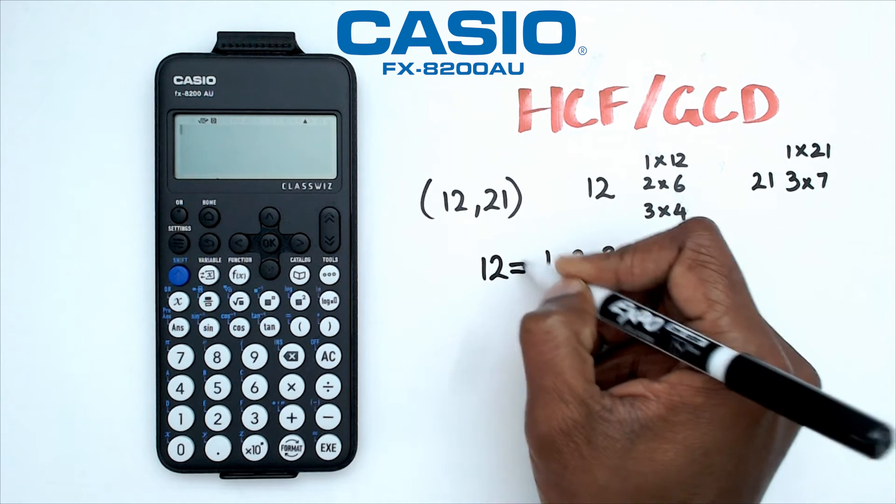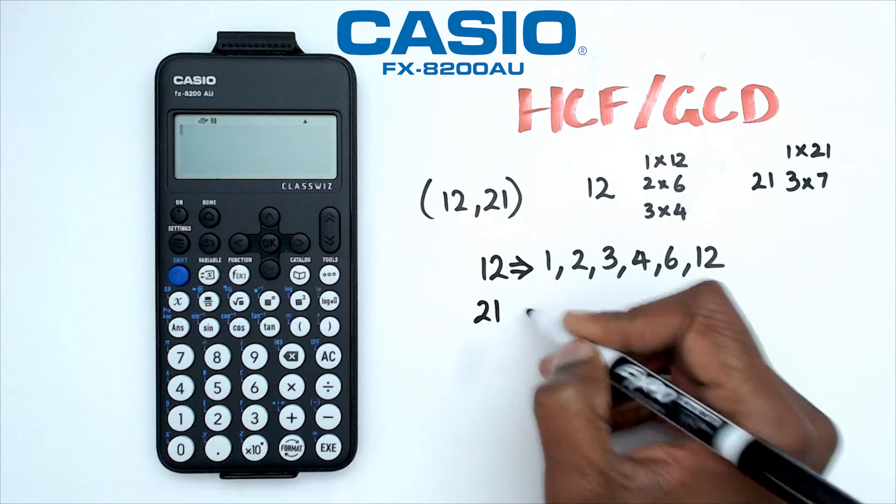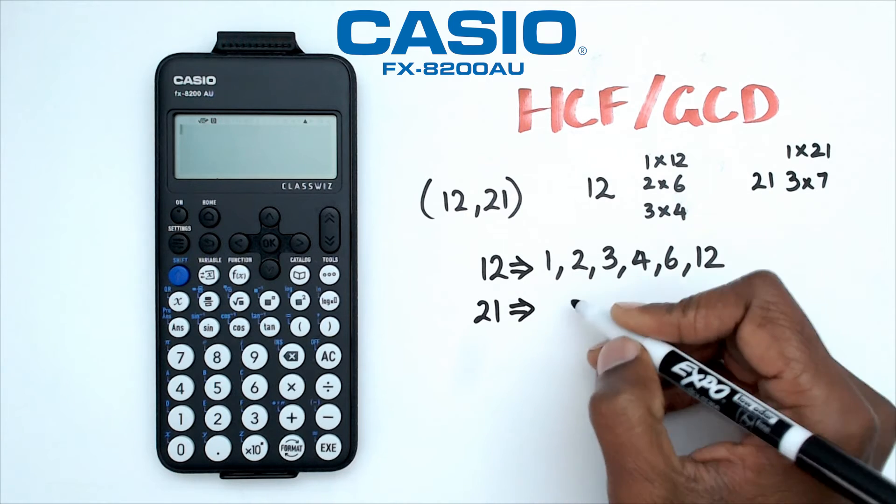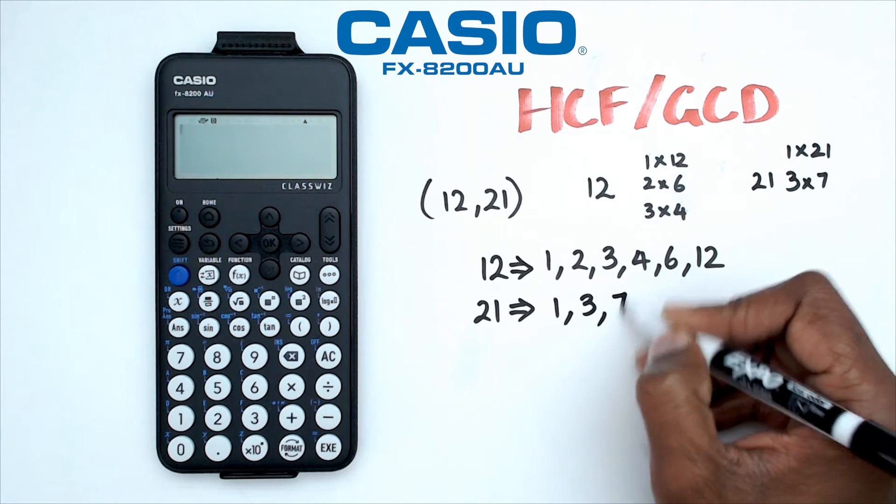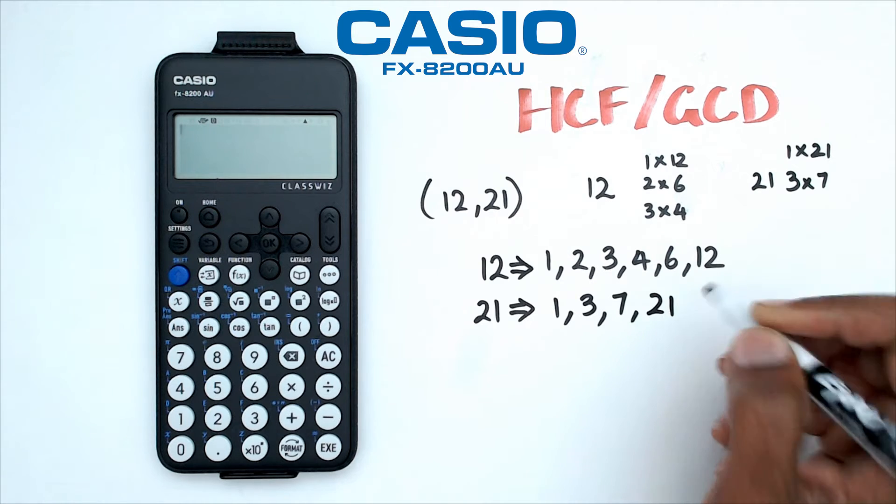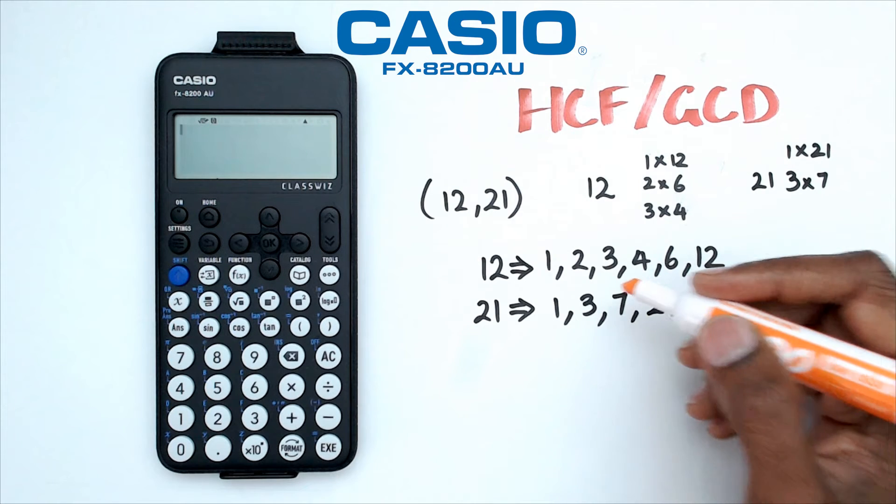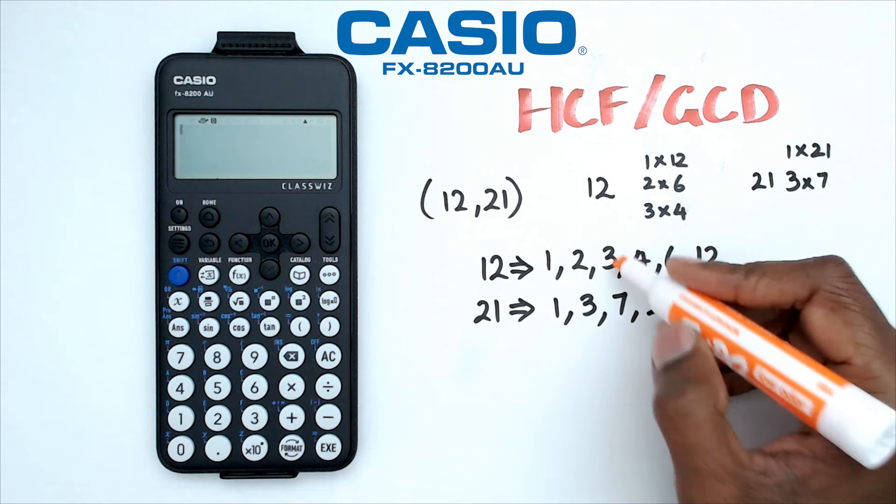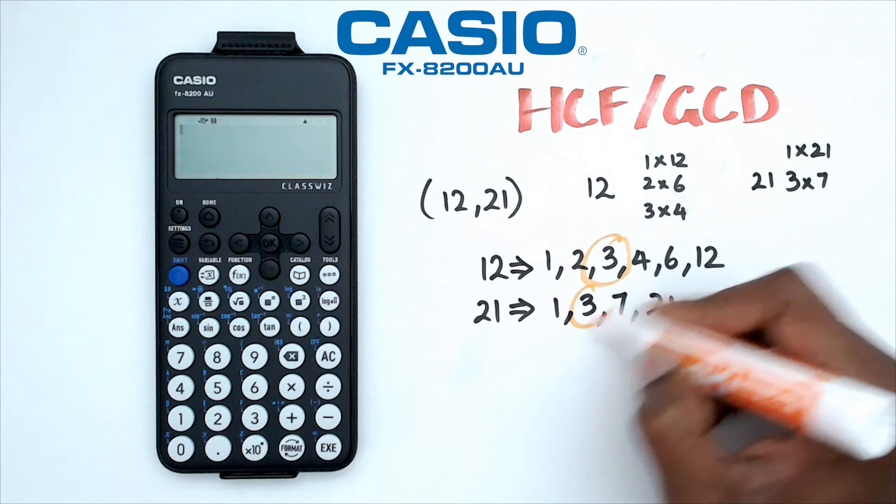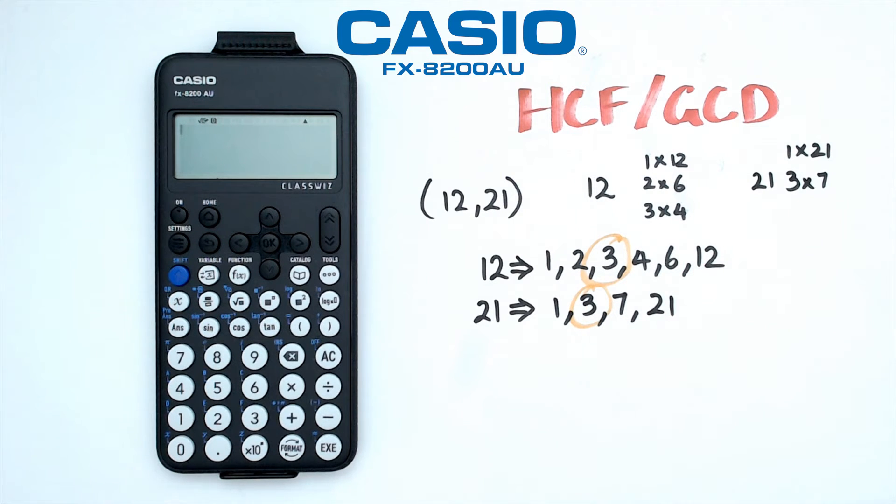So 12 factors are here, 21 factors are here, which is 1, 3, 7, and 21. Now what I'm going to do is I'm going to highlight the highest common factor or the greatest common divisor. And I can see in this case it is actually 3.